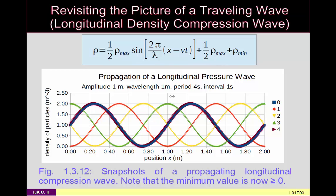We could do the same thing for a longitudinal wave, such as a density or pressure wave. The equation is slightly different because density has a minimum of zero — you can't have negative particles per cubic meter. At equilibrium there's some baseline density, and oscillations cause it to go down toward zero in rarefaction regions and up to twice that in compression regions. So the equation must include both a minimum offset and a maximum offset.